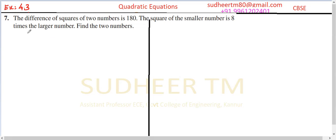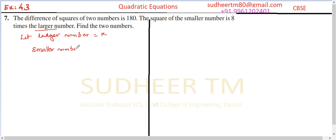Question 7, Exercise 4.3 — quadratic equation. The difference of squares of two numbers is 180, and the square of the smaller number is 8 times the larger number. Let the larger number be X. Then the smaller number squared equals 8 times X.